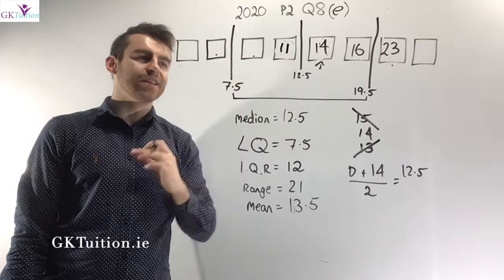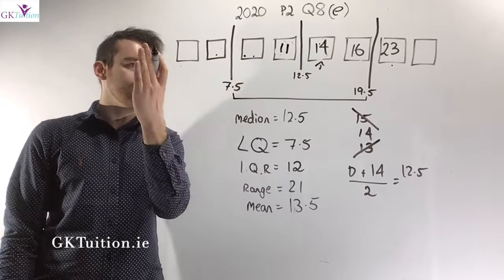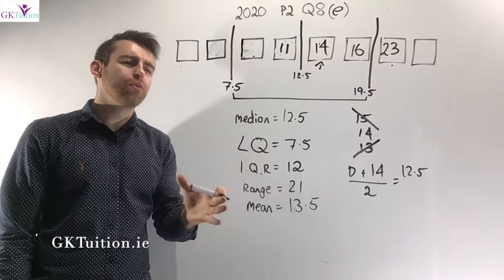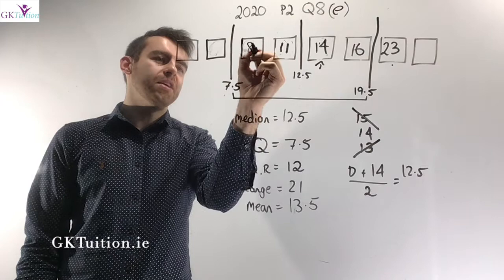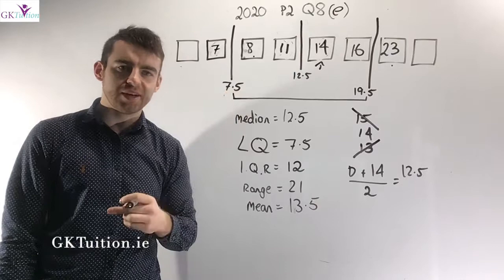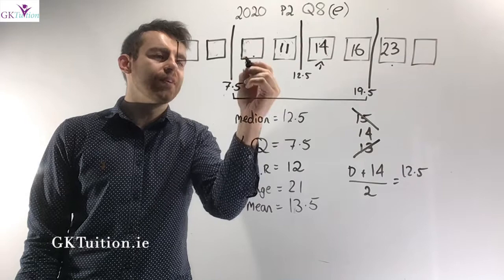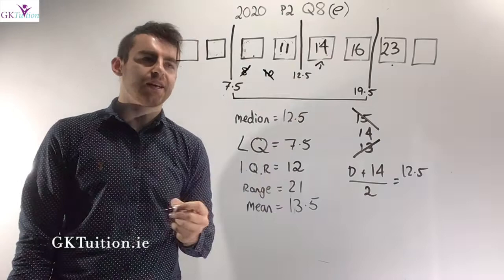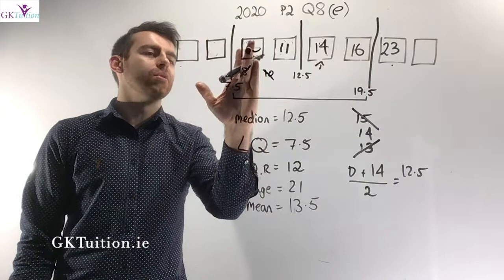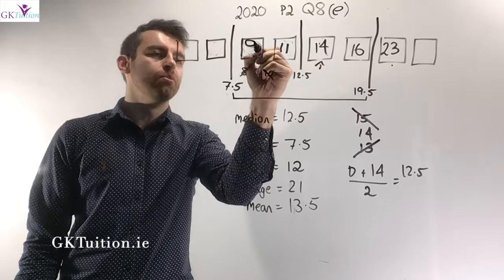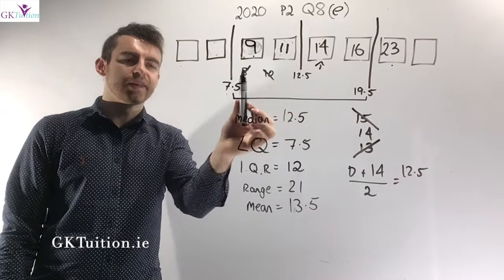For the lower quartile, the average of the 2nd and 3rd figures must equal 7.5. The 3rd figure can't be 8 (only 1 less than 9 would be needed below), can't be 10 (only 1 less than 11), but must be greater than 7.5. So the 3rd figure must be 9, giving the 2nd figure as 6, since (9 + 6) / 2 = 7.5.